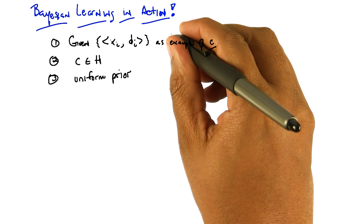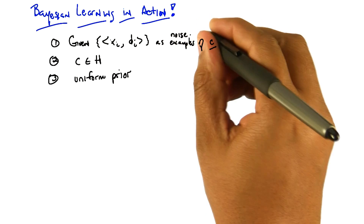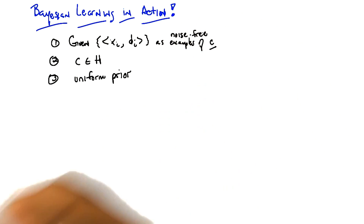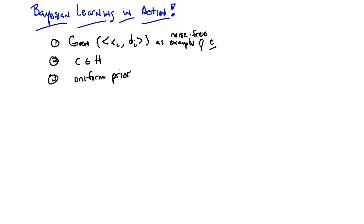So they're true examples that tell you what C is. Let me write that down because I think it's important — they're noise free examples, like d_i equals C of x_i, for all x_i. So the second assumption is that the true concept C is actually in our hypothesis space, whatever that hypothesis space is. And finally, we have no reason to believe that any particular hypothesis in our hypothesis space is more likely than any other, and so we have a uniform prior over our hypotheses. The one thing we know is that we don't know anything.